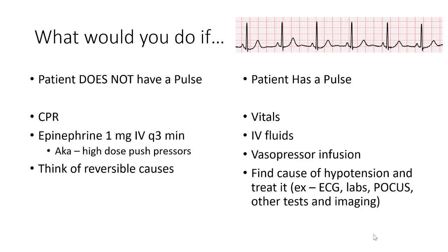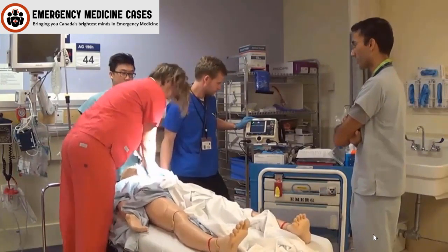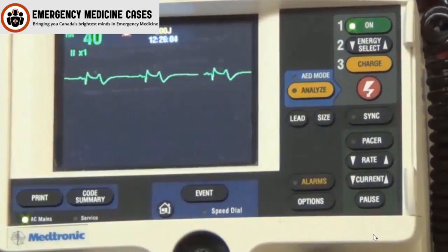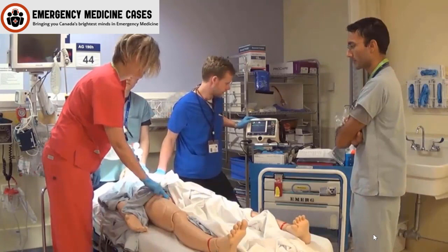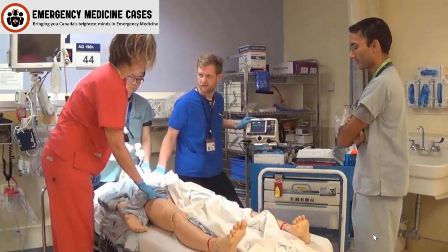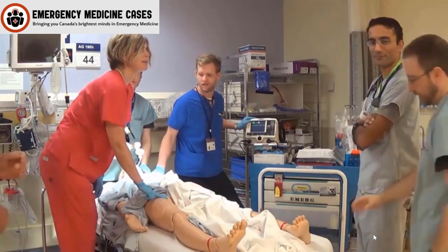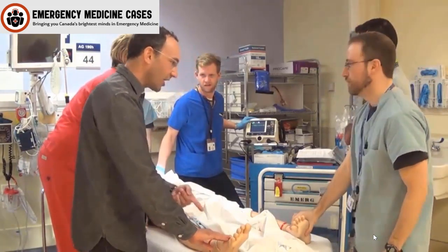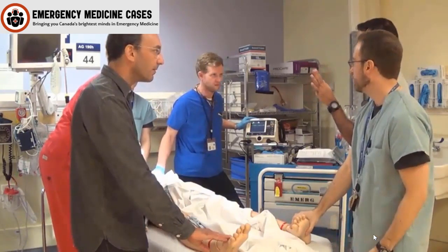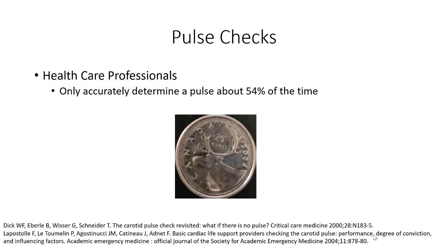So let's see how pulse checks usually go in unresponsive patients. [Simulated resus room scenario: 'Two minutes are up — hold compressions and check a rhythm. We have a rhythm. Can we get someone to check a pulse? Not sure if I feel one... Yeah, I feel one. I feel one. Nope, I don't feel one.'] I'm sure we have all been there, thinking we might have felt a pulse but not 100% sure. Because healthcare professionals are poor at feeling for pulses. Multiple studies done in different decades have shown around the same number — healthcare professionals are only accurate at feeling a pulse around 50% of the time.